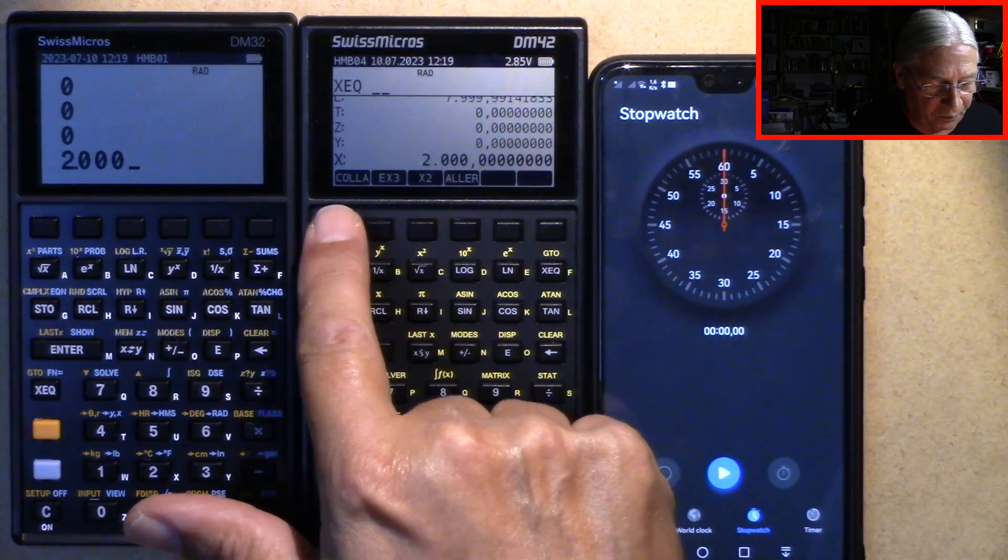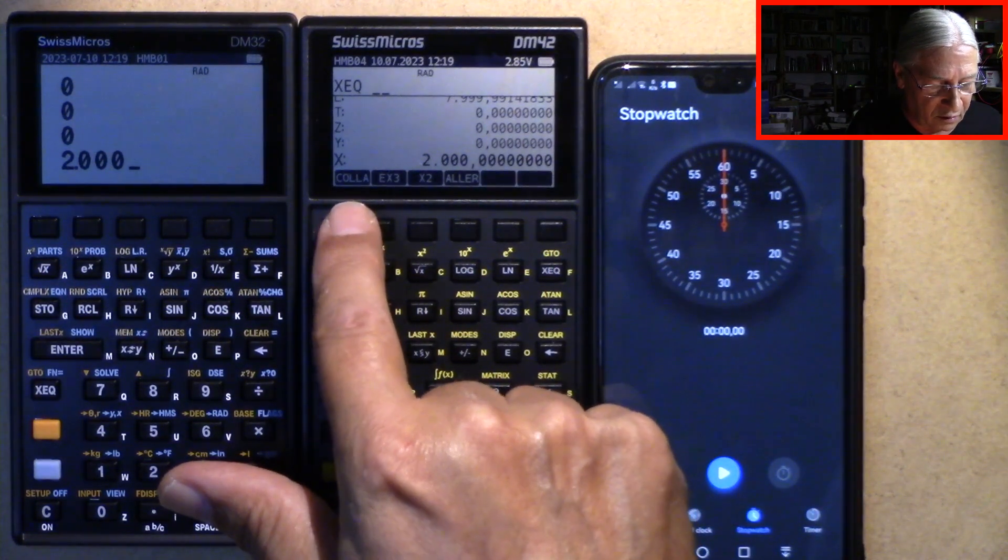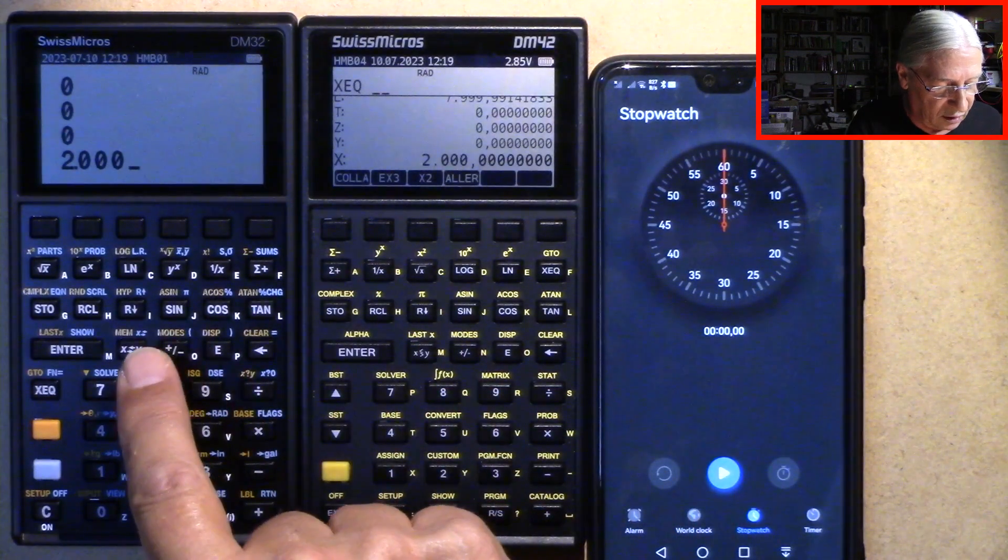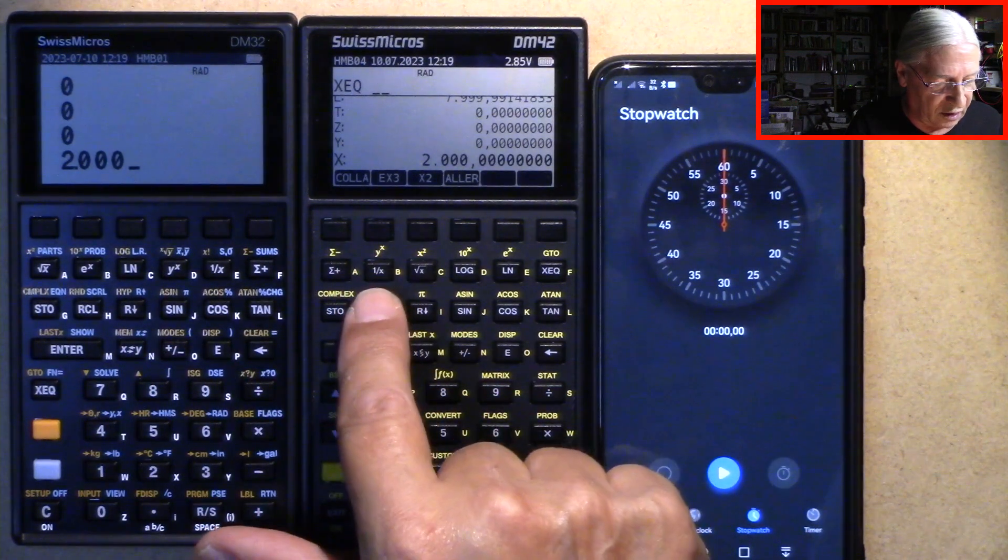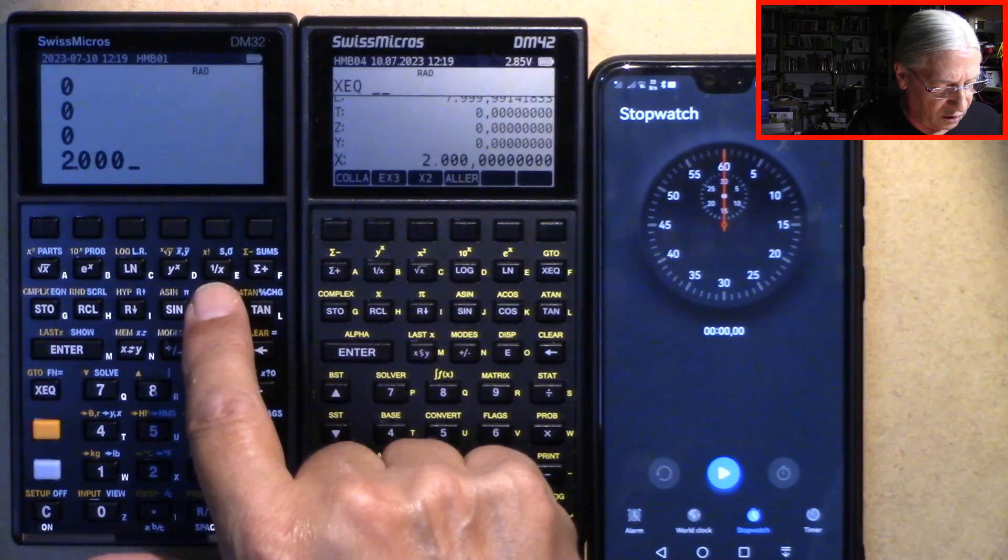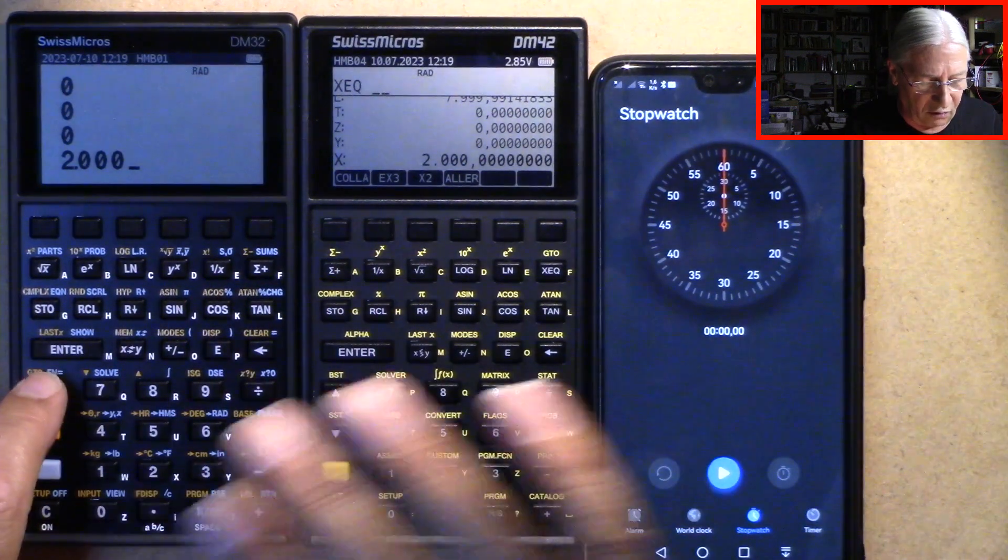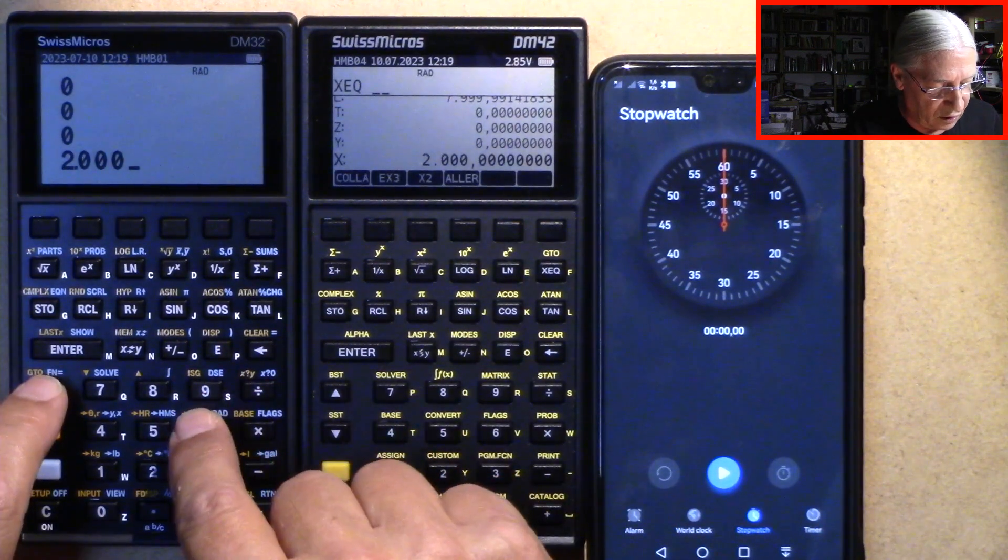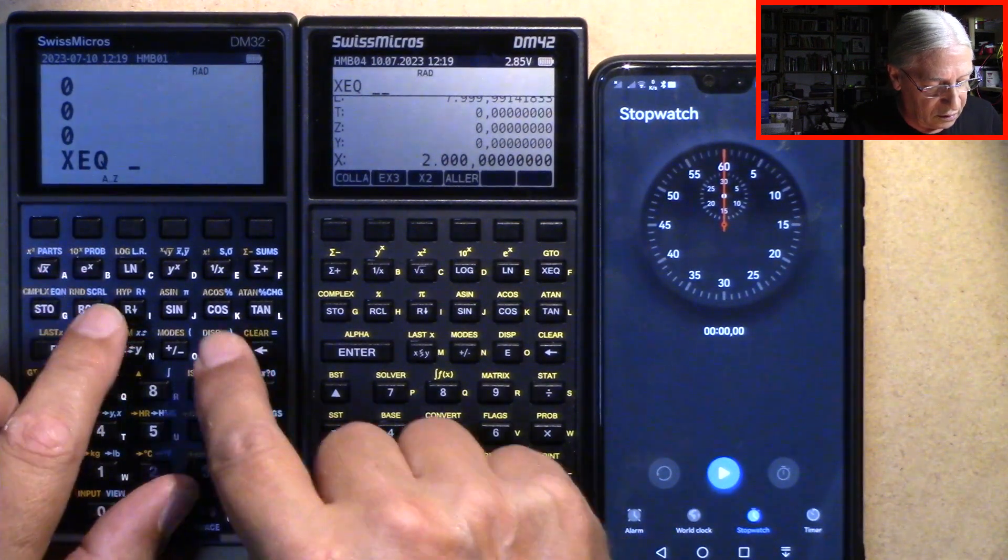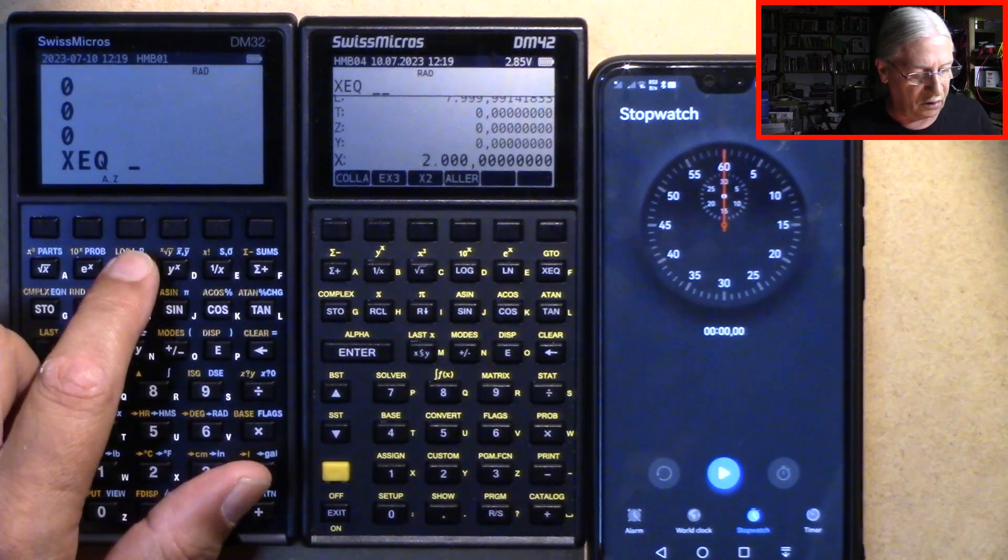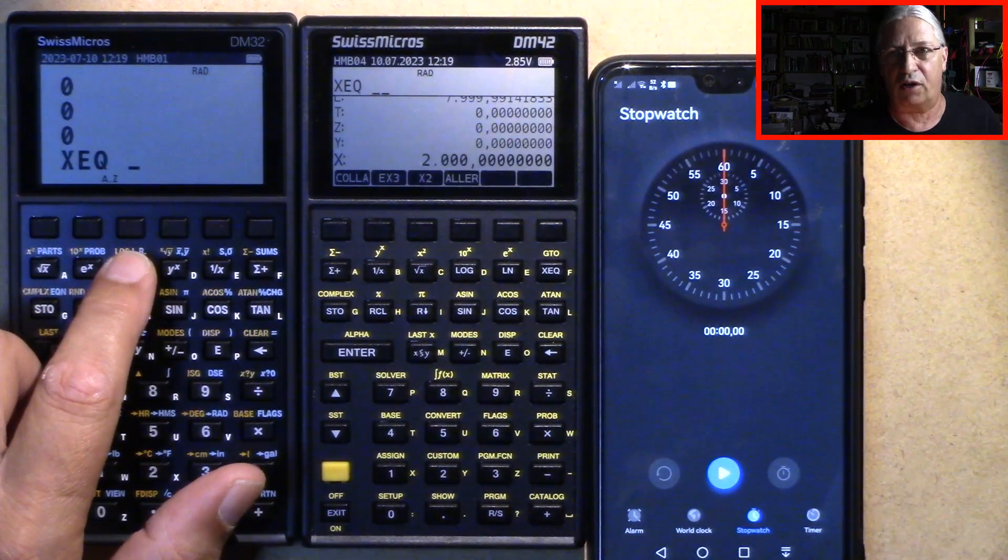Execute. Collat is my Collatz sequence program and it's absolutely identical to the one I use here on the DM32. So every line is identical. The label goes here by the name C because it allows only for one character.